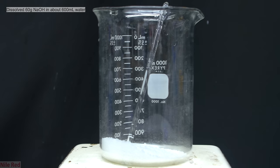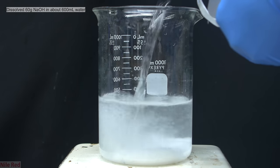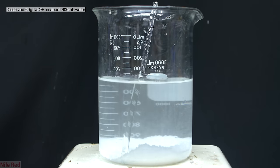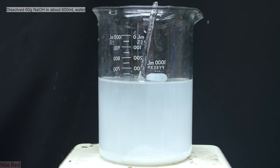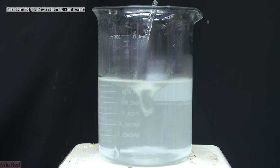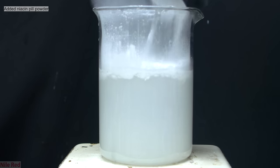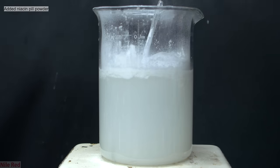After powderizing the pills, I move on to making a sodium hydroxide solution by dissolving about 60g of sodium hydroxide in about 600ml of distilled water. Once all the sodium hydroxide has dissolved, I directly pour in all of the niacin pill powder.